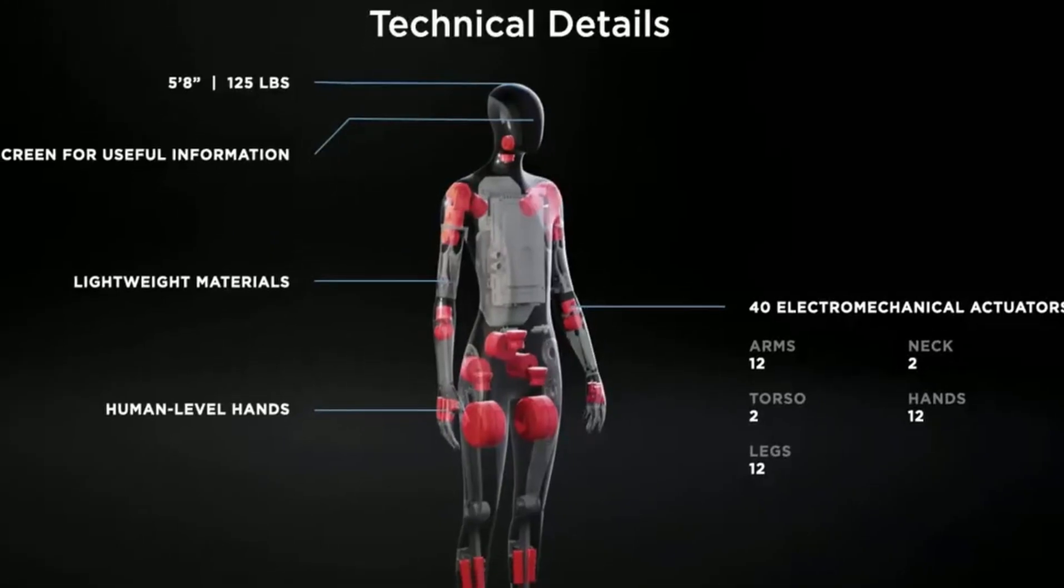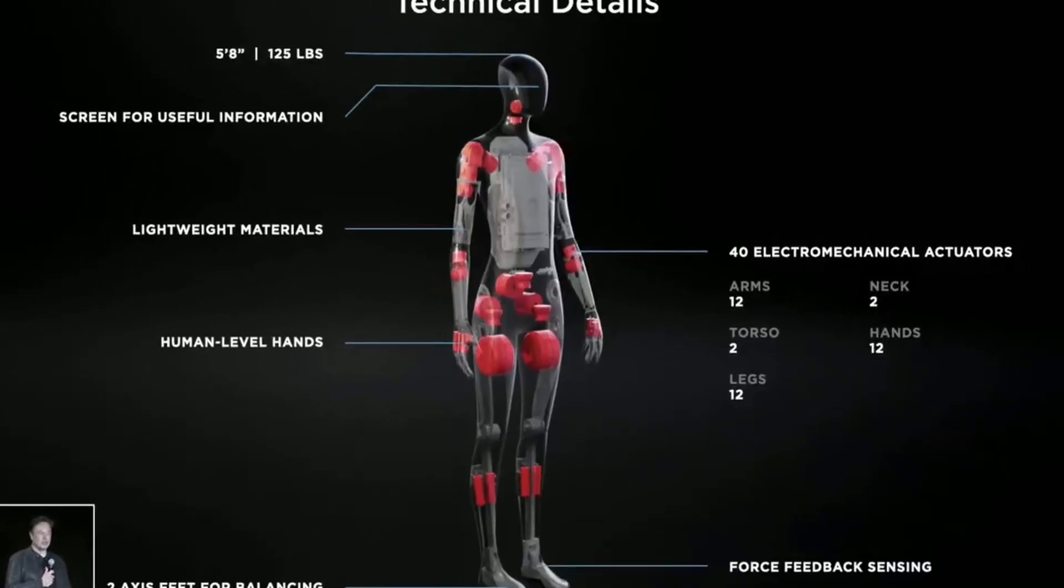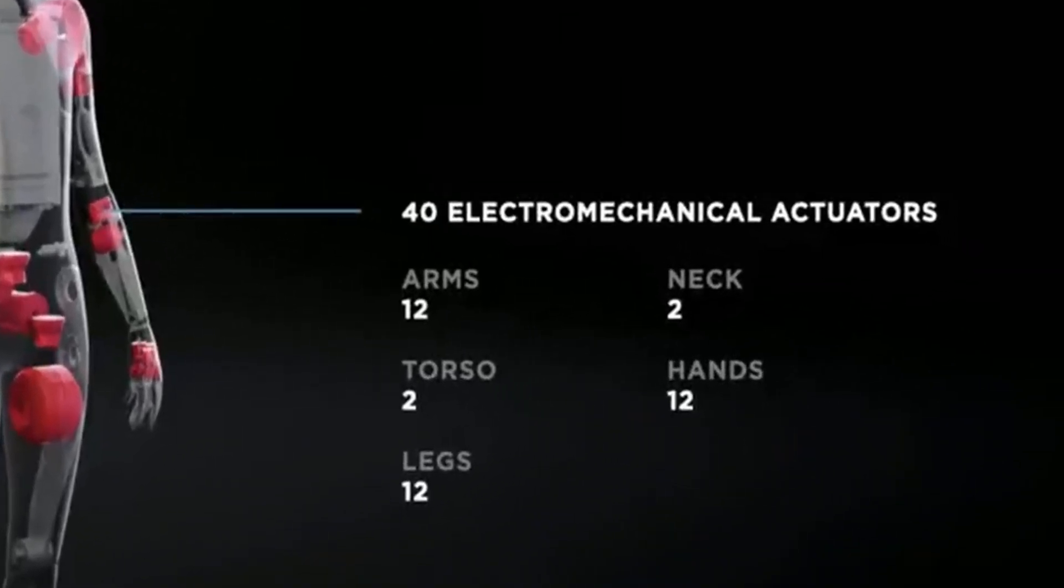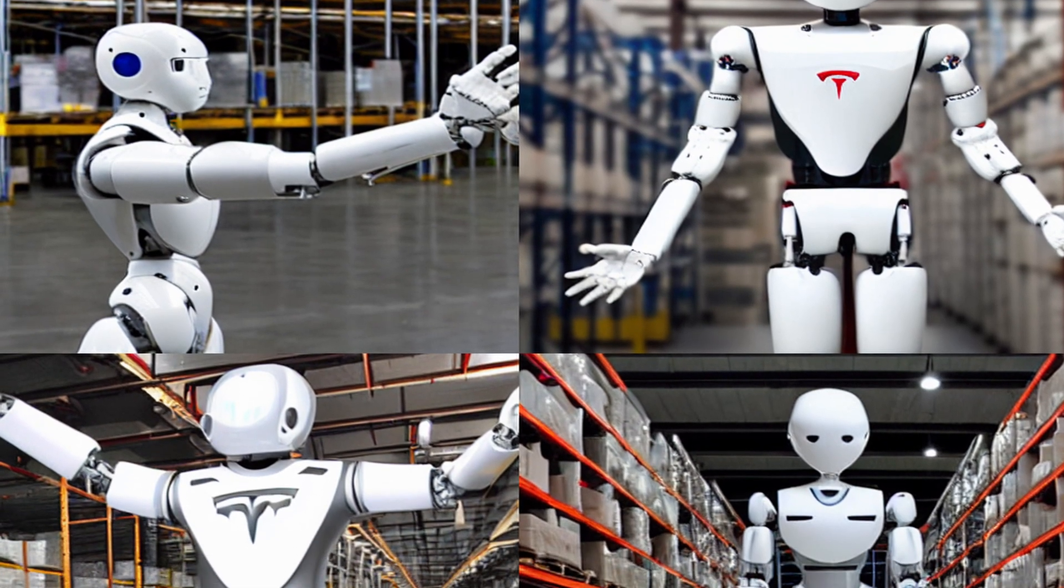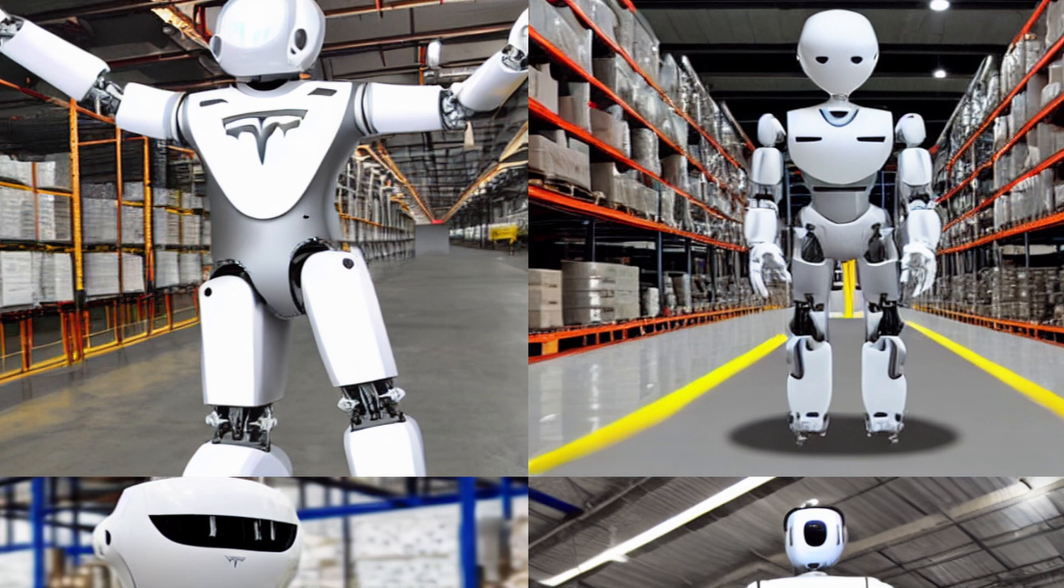It is also said to have human-level hands, a screen for useful information, and 40 electromechanical actuators for fluid movement, with 12 in its arms, 2 in its neck, 2 in its torso, 12 in its legs, and 12 in its hands. The Optimus humanoid robot will be able to deadlift a moderately impressive 150 pounds.